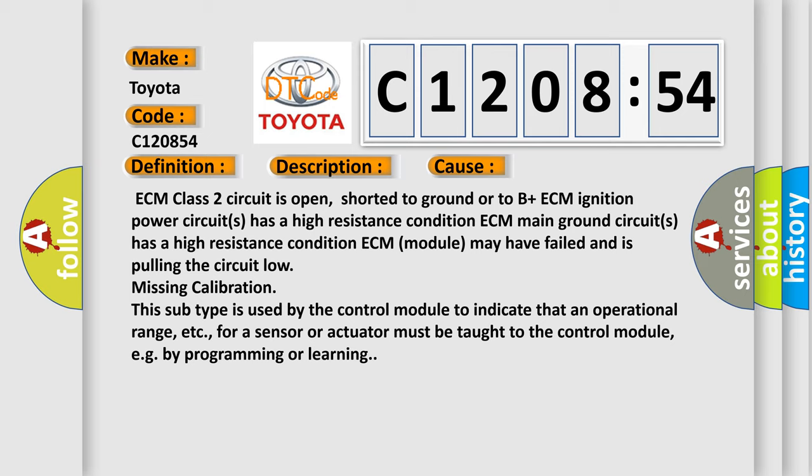This sub-type is used by the control module to indicate that an operational range, etc., for a sensor or actuator must be taught to the control module, e.g., by programming or learning.